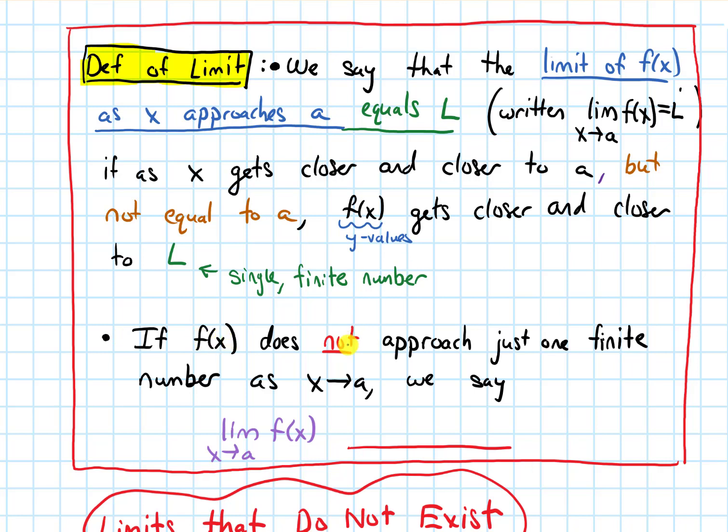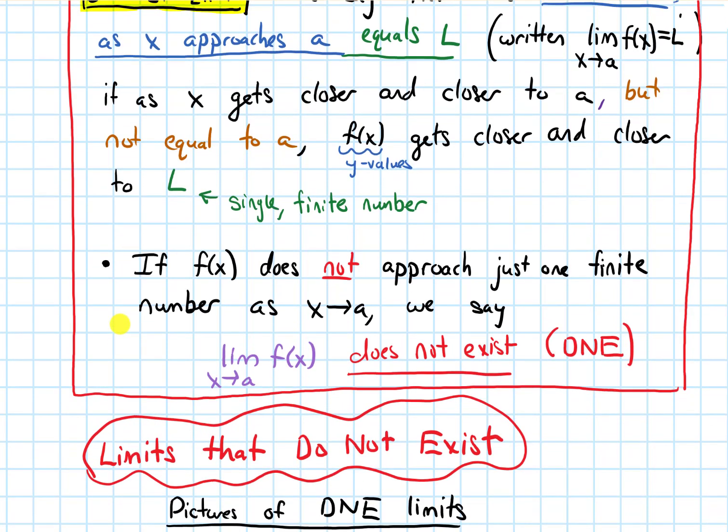If, on the other hand, f(x) does not approach just one finite number as x approaches a—the way I read that arrow is x approaches a—then we say that our limit, as x approaches a of f(x), does not exist. We'll abbreviate that by writing DNE. And in the next video, we'll look at some pictures of what does it look like if my limit does not exist.